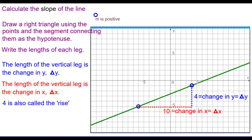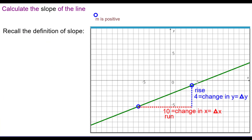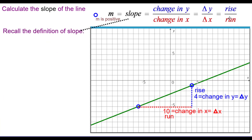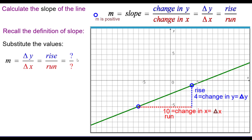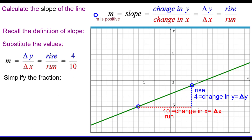We also call the change in y the rise, and the change in x is the run. Now recalling the definition of slope — change in y over change in x, rise over run — we can substitute the values. Since we know that the slope is positive, the rise is 4 and the run is 10. We simplify that fraction: the slope is 2 fifths, positive 2 fifths.